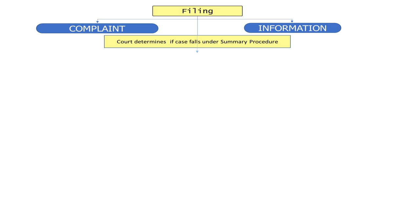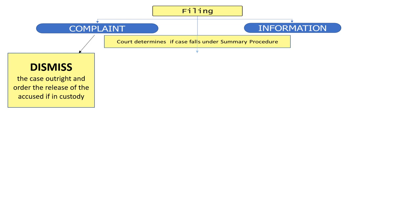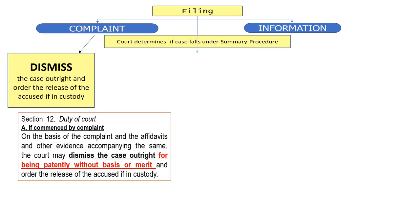After the court determines that the case is under the rule on summary procedure, you must make a distinction. When the case is commenced through a complaint, the court can dismiss the case outright. That is very clear according to Section 12: on the basis of the complaint and the affidavits and evidence, the court may dismiss the case outright for being patently without basis or merit and order the release of the accused if he is in custody. If the judge finds the case has merit, the court will issue an order requiring the accused to submit his counter-affidavit.